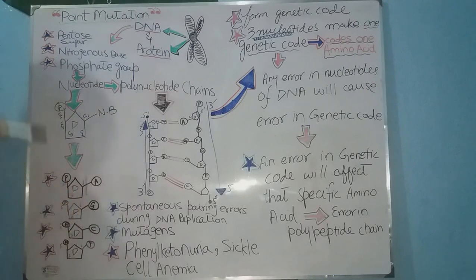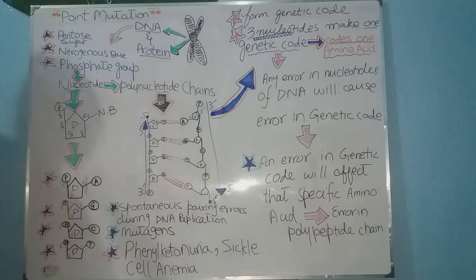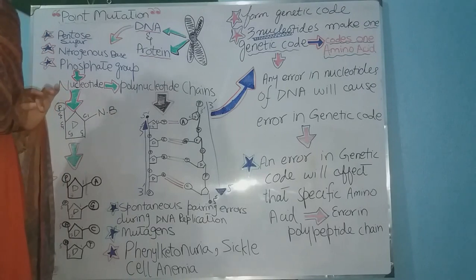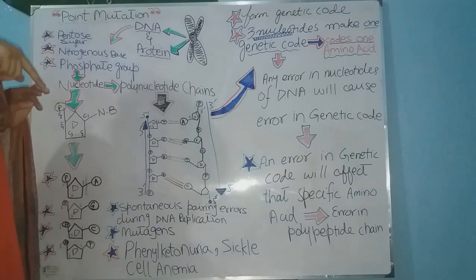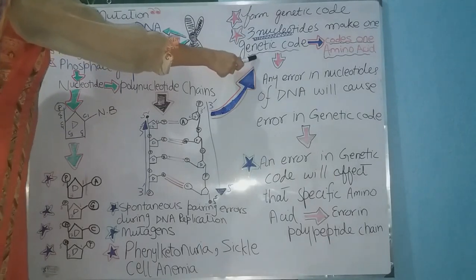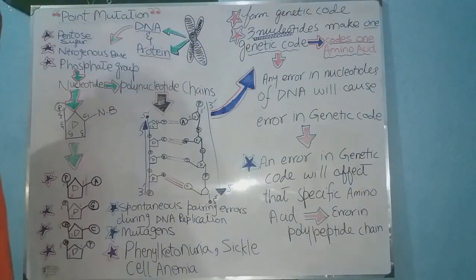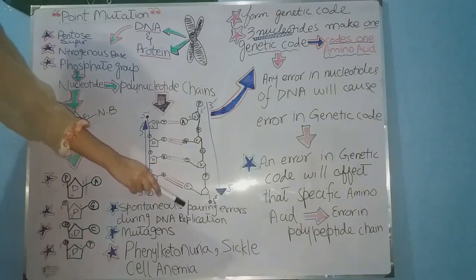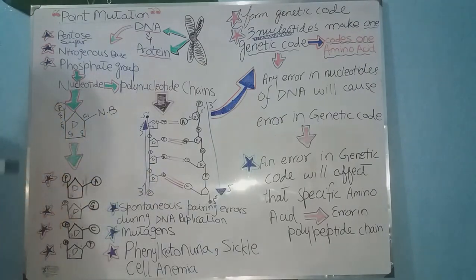In sickle cell anemia, only one amino acid is affected — glutamic acid, which was required in the polypeptide chain, is replaced by valine due to an error in the genetic code. As a result, the protein cannot perform its function, the red blood cell structure is not proper, and the person suffers from sickle cell anemia.